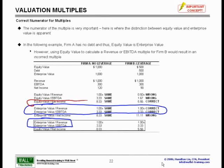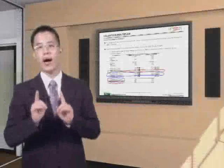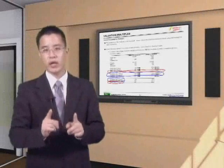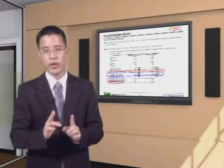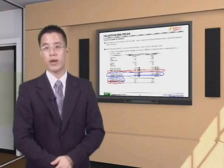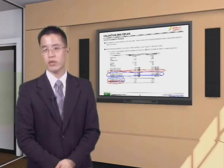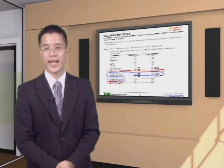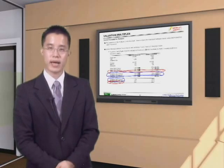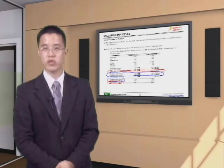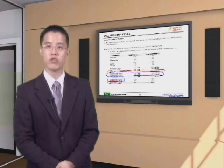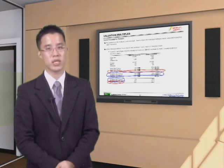for equity value, the only correct denominator is net income — that is this number down here. The question I will pose to you is: why is it that enterprise value is the correct numerator when you are trying to figure out revenue multiples as well as EBITDA multiples? And why is equity value the correct number to use for net income? Think about that, and then you can move on to our explanation of why the numerator is going to be different for each one of these multiples.